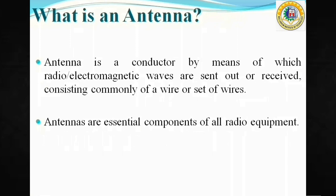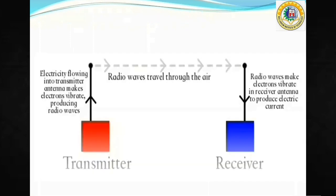What is an antenna? An antenna is basically a conductor by means of which radio or electromagnetic waves are sent out or received. It consists commonly of wires or a set of wires or any conducting element. Antennas are the essential components of all radio equipment. Without an antenna, a communication system is practically an incomplete one.